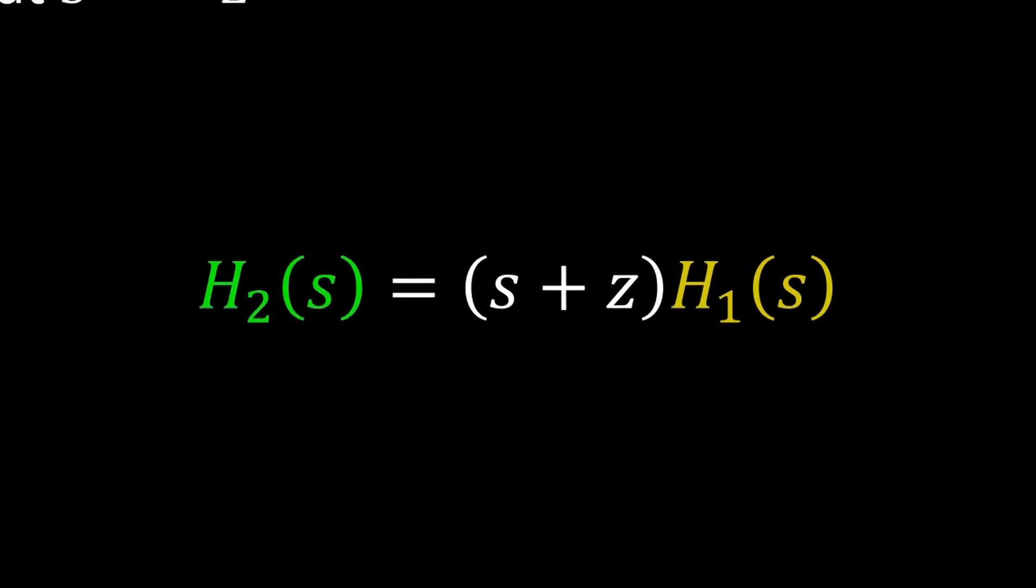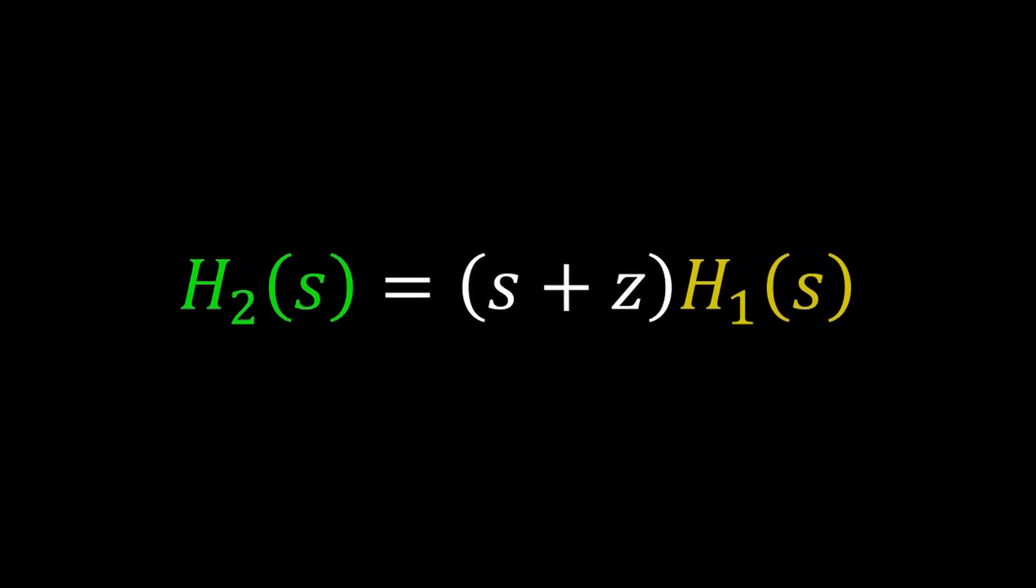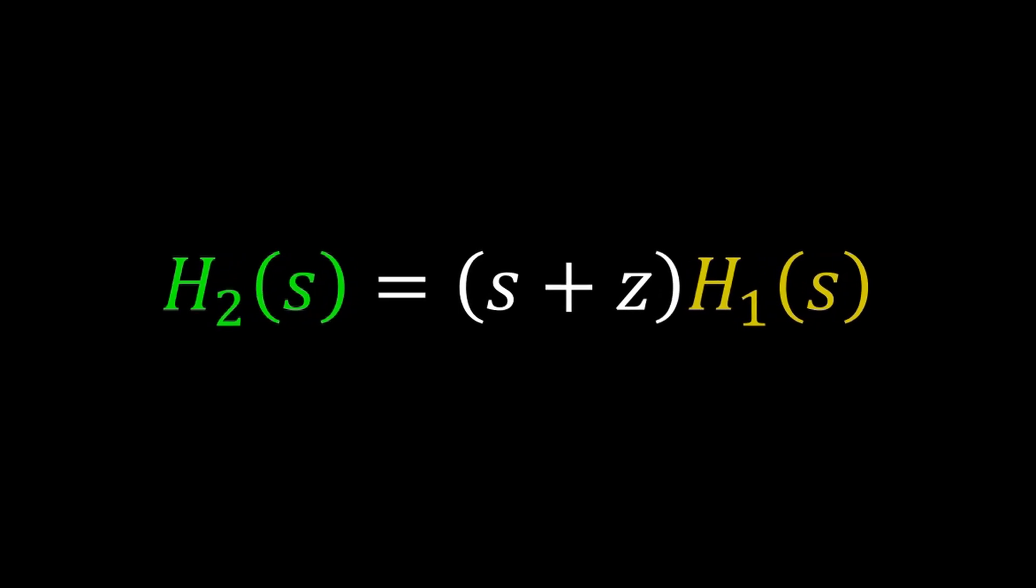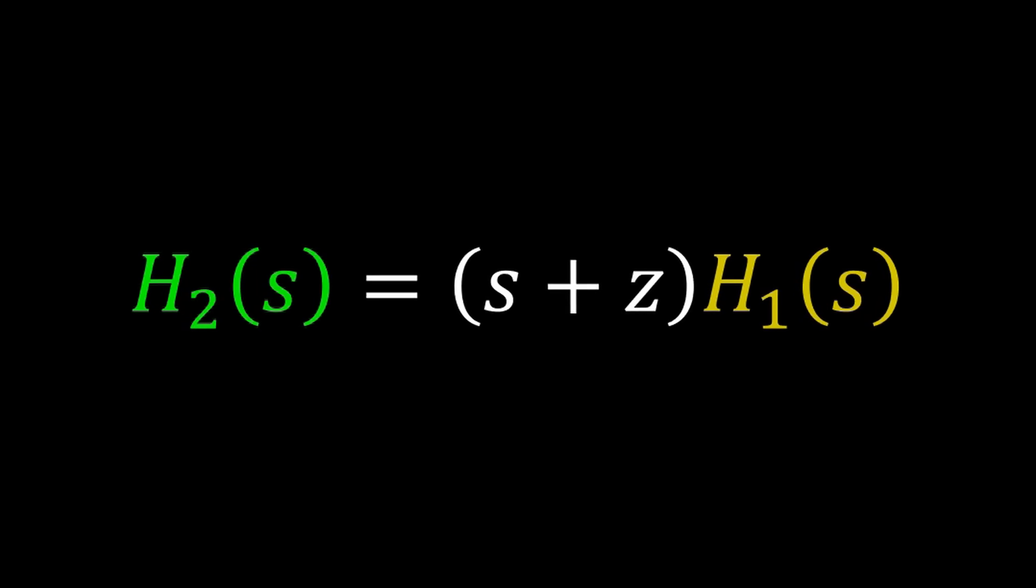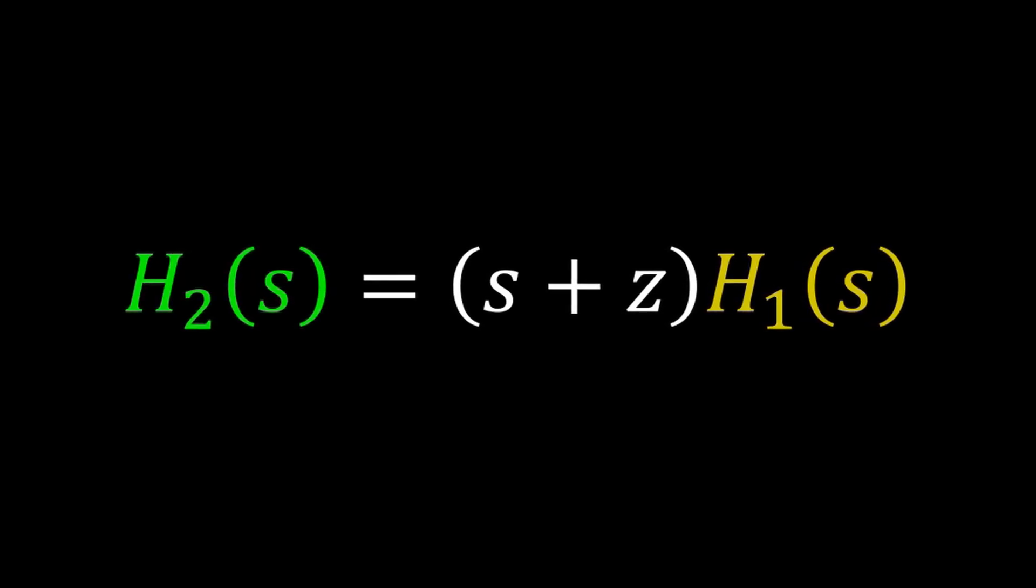That S plus Z transfer function, as we have shown, scales the no zero response and adds its derivative, potentially superimposing large transient oscillation on the H1 or no zero response.